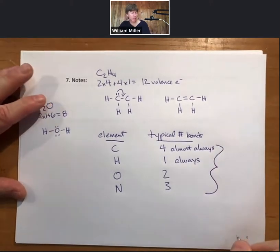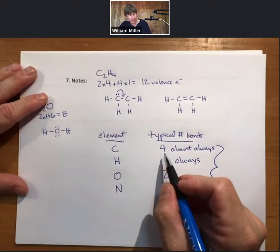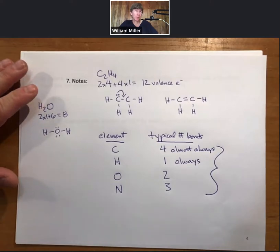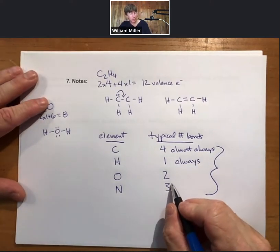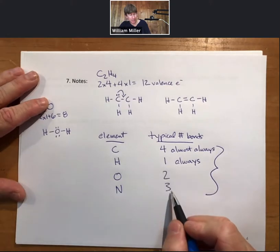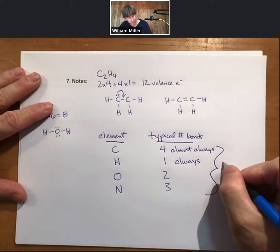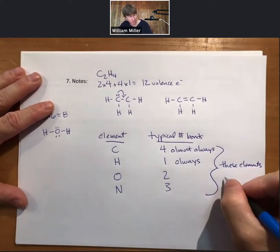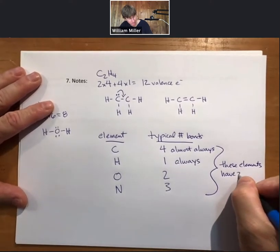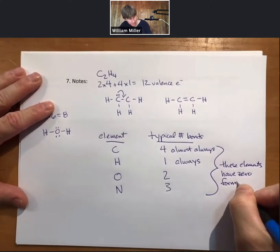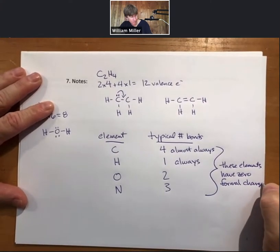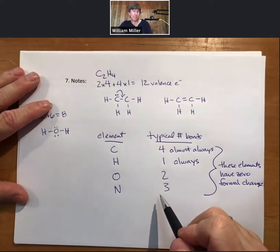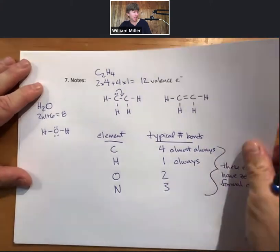On the next page we're going to talk about something called formal charge. These typical, almost always, or always numbers of bonds are representative when these elements have zero formal charge — and we'll talk about that on the next slide.